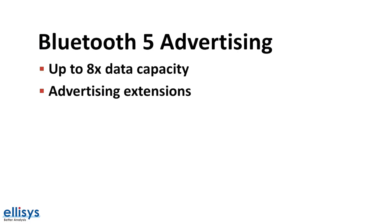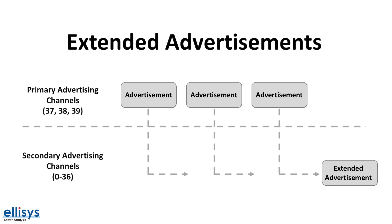Bluetooth 5 introduced a feature that allows advertising devices to broadcast much more data than previous versions — up to eight times the capacity. This new feature is called Advertising Extensions, or Extended Advertisements. In earlier versions, advertisement data was capped at 31 bytes, but with extended advertisements the capacity is increased to up to 255 bytes. The way advertising extensions work is by the device sending out primary advertisements, which contain information on how to locate — in time and frequency — the secondary advertisements, called Extended Advertisements. These extended advertisements are sent out on the secondary advertisement channels, which are the same as the data channels used during a connection.